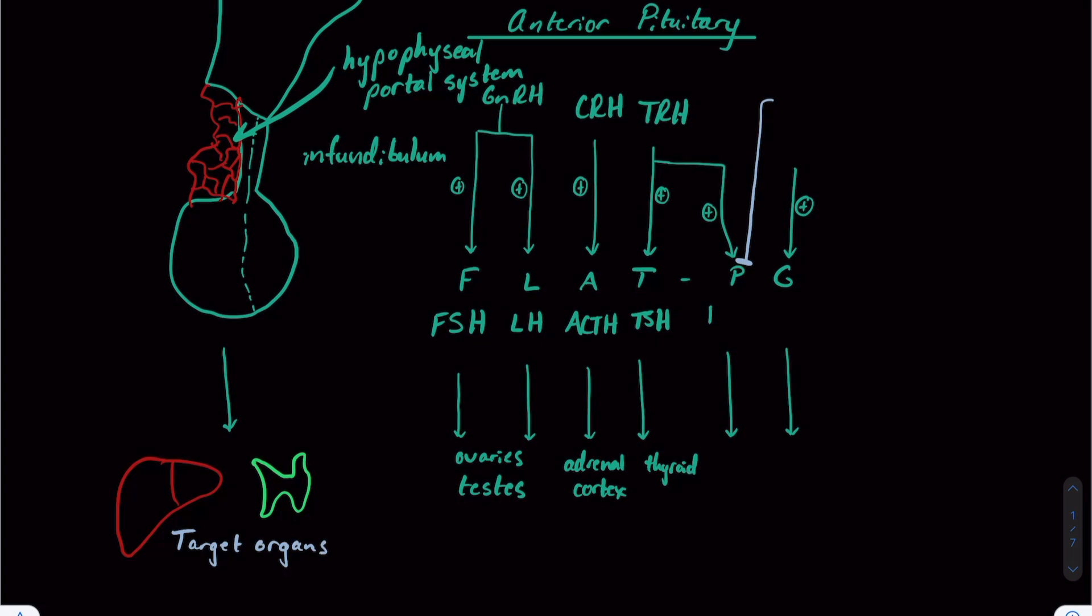P stands for prolactin. As the name would suggest, it acts on the mammary tissue to stimulate milk production. What's interesting about prolactin is that it's actually inhibited by dopamine. So drugs that block dopamine are actually going to increase the amount of prolactin. G stands for growth hormone, stimulated to be secreted by GHRH or growth hormone releasing hormone. Growth hormone acts on a couple different tissues, primarily on the liver to release insulin-like growth factor one.